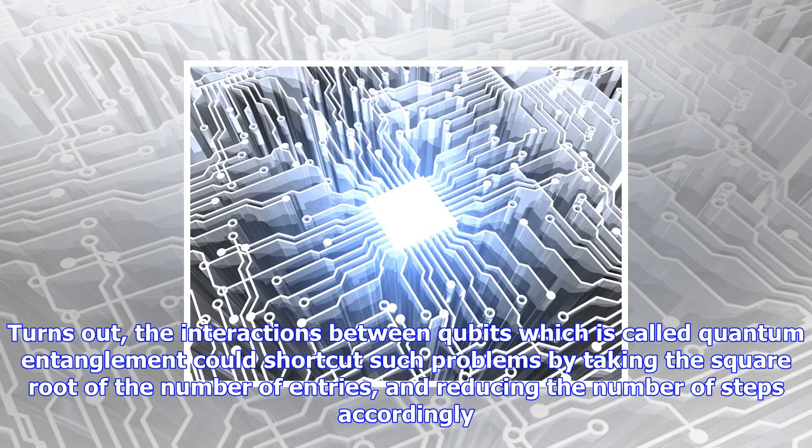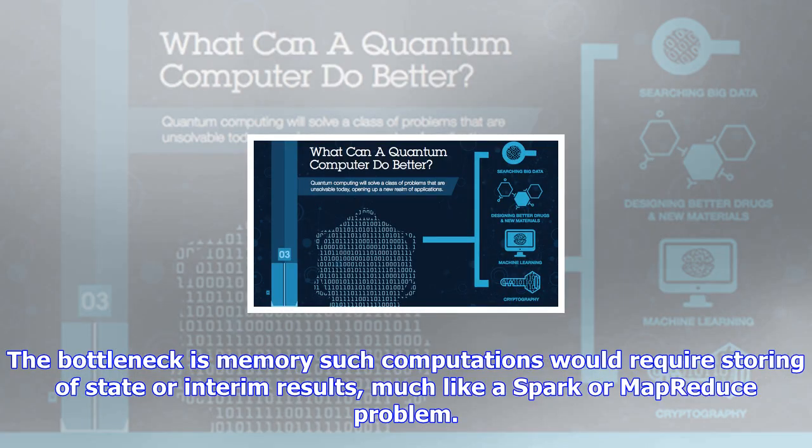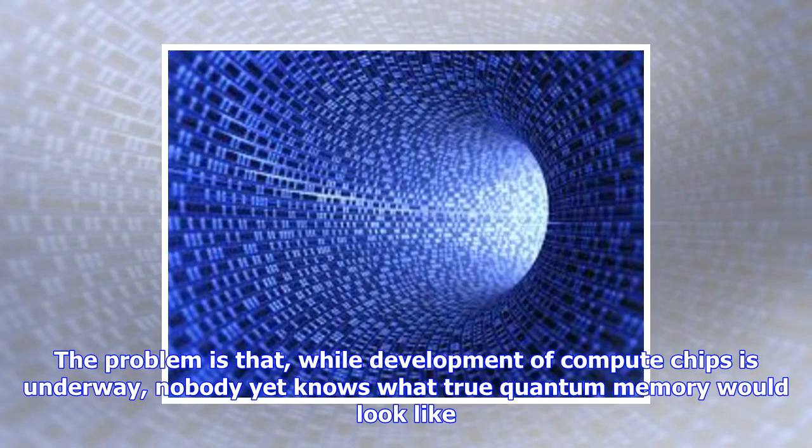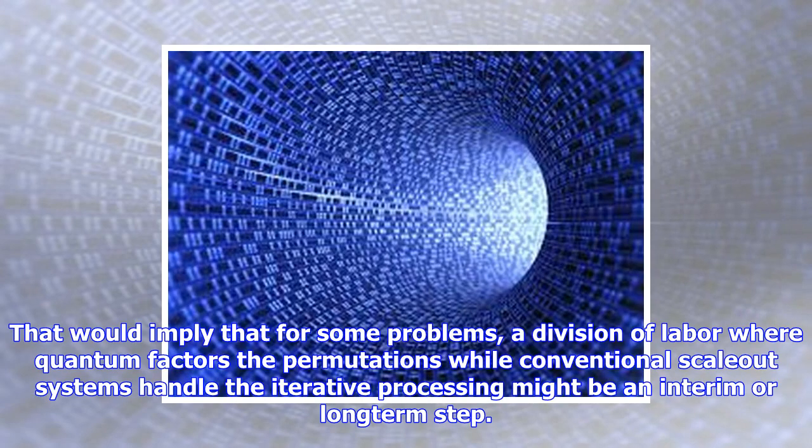A good example of the type of problem that for now is just out of reach is encryption decryption. As the algorithms grow more complex, it means factoring larger and larger prime numbers. Turns out, the interactions between qubits which is called quantum entanglement could shortcut such problems by taking the square root of the number of entries, and reducing the number of steps accordingly.